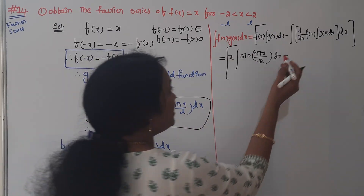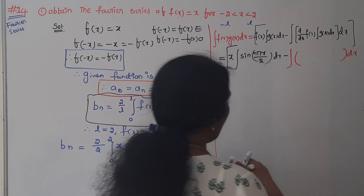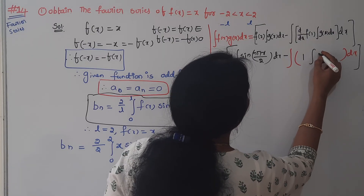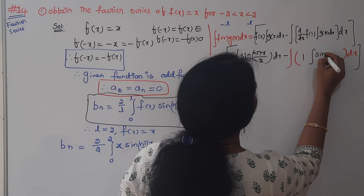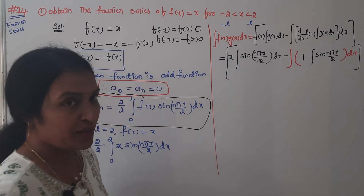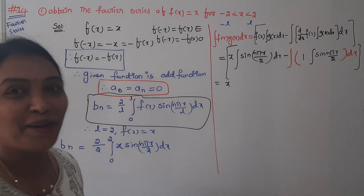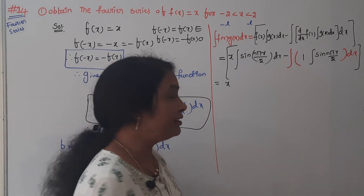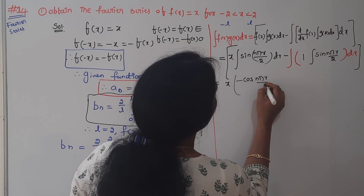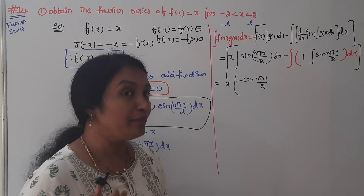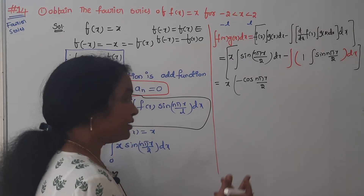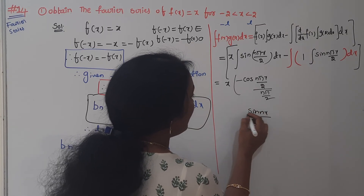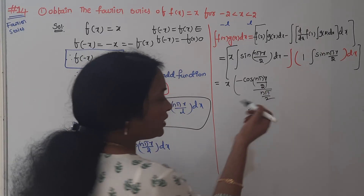Minus integral of: derivative of first times integral of second dx. The derivative of x is 1. The integral of sin(nπx/2) is minus cos(nπx/2) divided by nπ/2. So the result is: x times (−cos(nπx/2))/(nπ/2), minus integral of 1 times (−cos(nπx/2))/(nπ/2) dx. Simplifying, this gives a plus term: (2 by nπ) times integral of cos(nπx/2) dx, which integrates to sin(nπx/2) divided by nπ/2.